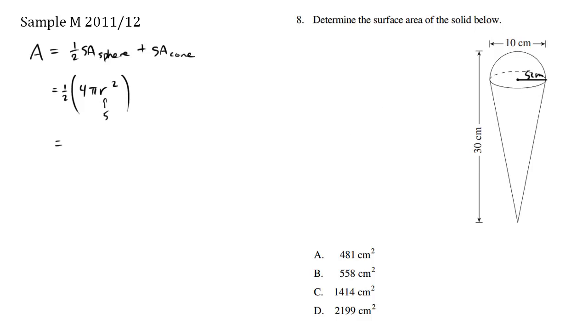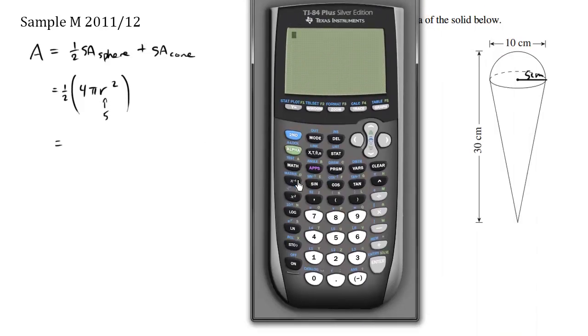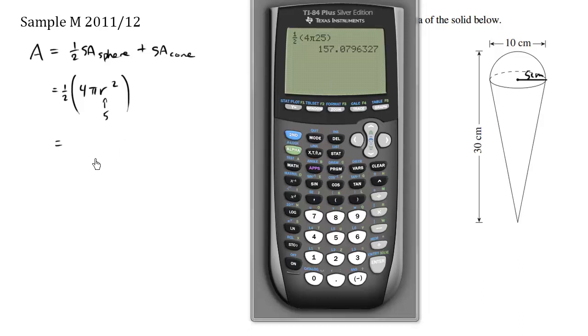So we work it out here on our calculator. We have 1 half times 4πr², which is 5 times 5, 25. And this equals to 157.07. So this first part is approximately equals to 157.0796.